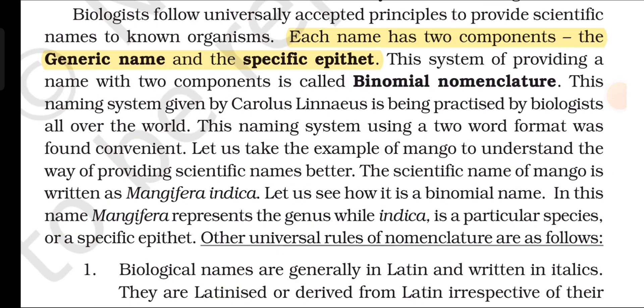Biologists follow universally accepted principles to provide scientific names to known organisms. Each name has two components: the generic name and the specific epithet. This system of providing a name with two components is called binomial nomenclature, given by Carolus Linnaeus, and is practiced by biologists all over the world. For example, the scientific name of mango is written as Mangifera indica. In this name, Mangifera represents the genus while indica is the specific epithet.